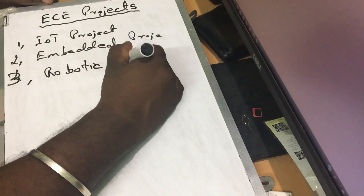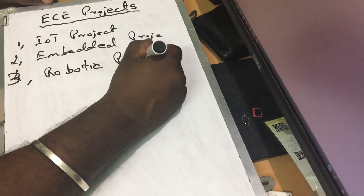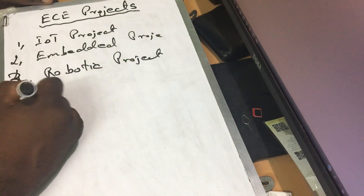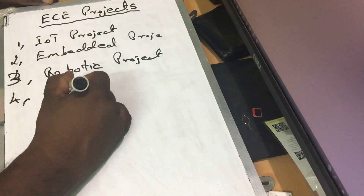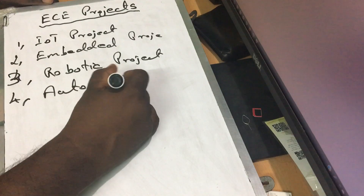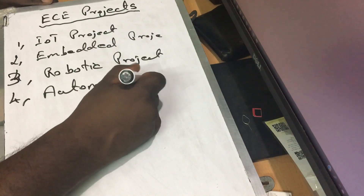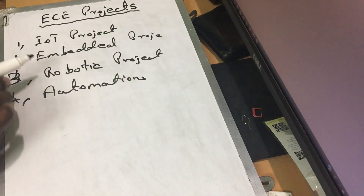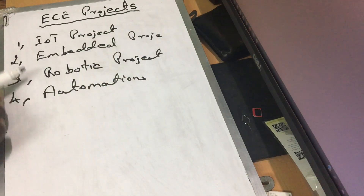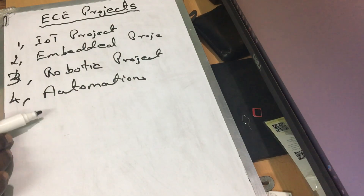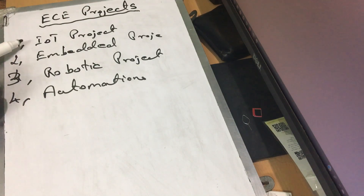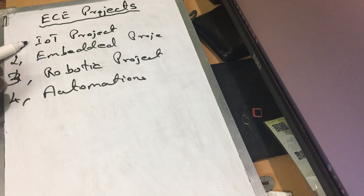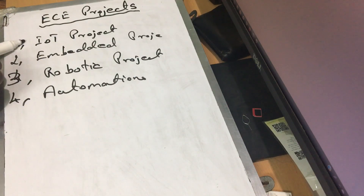So if you want to talk about what you want to do, you want to do automation. The concept is the same — embedded projects can be IoT, robotics can be IoT related, automation can be IoT related.